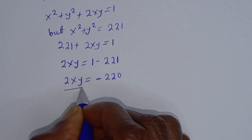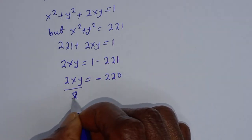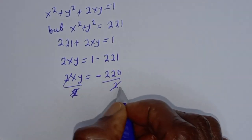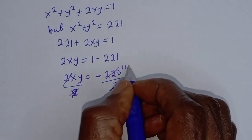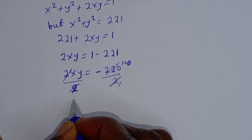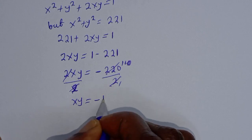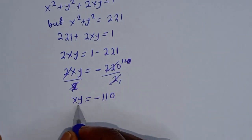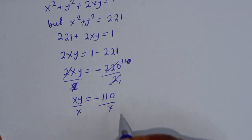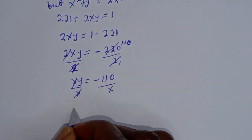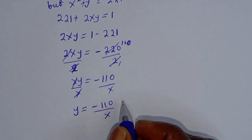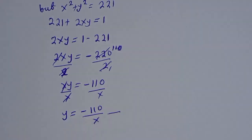2xy equals negative 220. Dividing both sides by 2, xy equals negative 110. Let's make y the subject: y equals negative 110 over x. Let's call this equation 5.